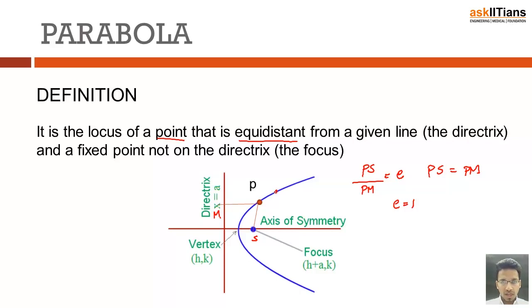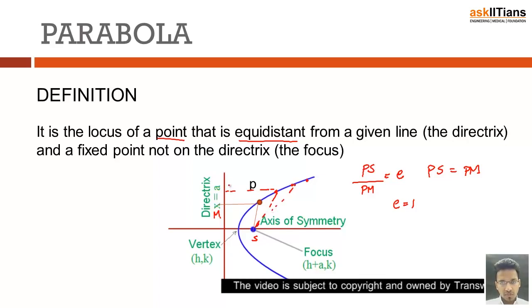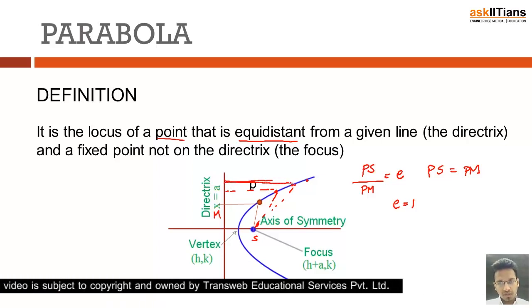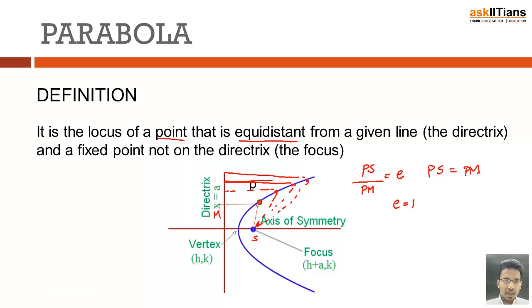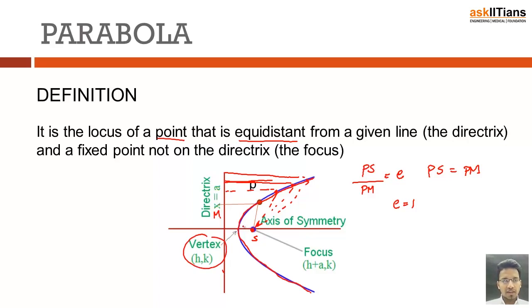What this means is that whenever I am moving any point, if you measure the distance from the fixed point and the perpendicular distance from the directrix — the fixed line — those will be equal. It is the collection of all such points. You will finally get a path like this. On this path each point will be equidistant from the focus and the directrix. The vertex is the point where the parabola intersects the axis.